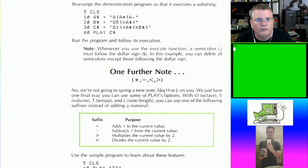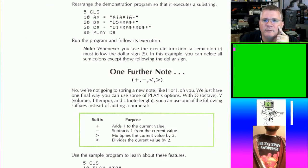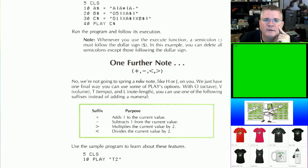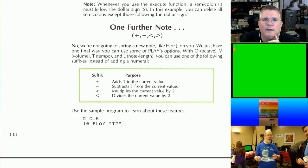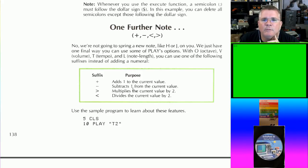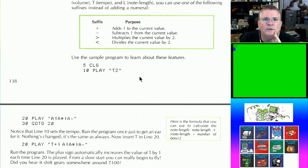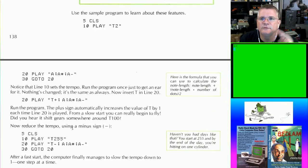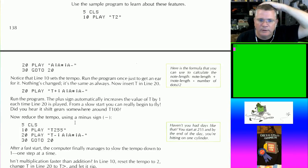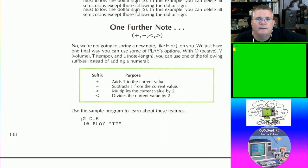One further note: you can use suffixes instead of numerals with octave, volume, tempo, and length. Minus subtracts one, greater-than multiplies by two, and less-than divides by two. So T-plus increases the tempo and T-minus decreases it. You could use FOR-NEXT loops to change your volumes and things like that — that's actually pretty cool.